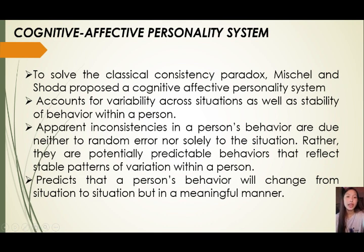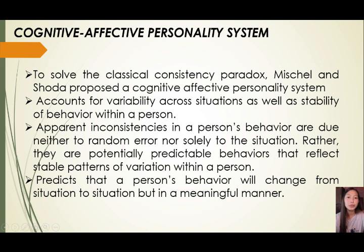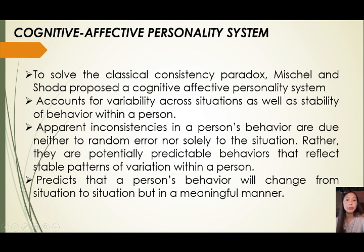It predicts that a person's behavior will change from situation to situation, but in a meaningful manner. This variation can be conceptualized in the framework as: if A, then X, but if B, then Y — when you are with your parents you behave differently than when you are with friends. To solve the classical inconsistency paradox, Mischel and Shoda proposed the Cognitive Affective Personality System. Apparent inconsistencies in behavior reflect stable patterns of variation within a person, and behavior changes from situation to situation in a meaningful manner.